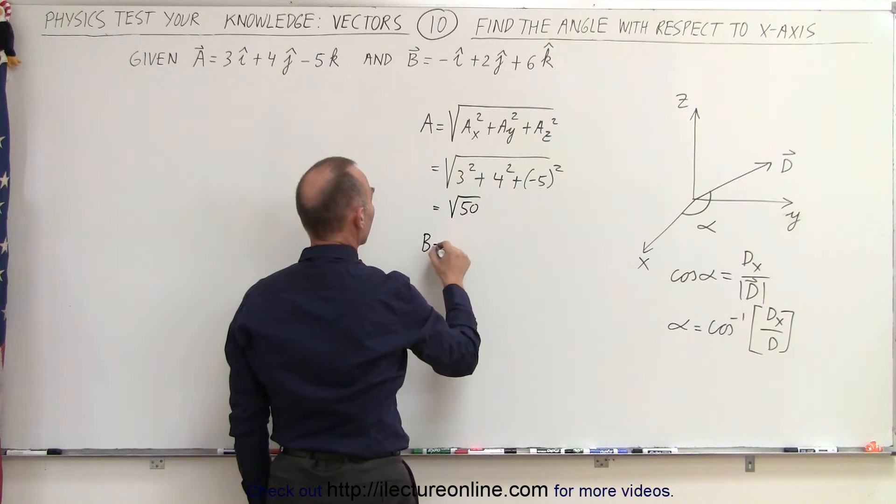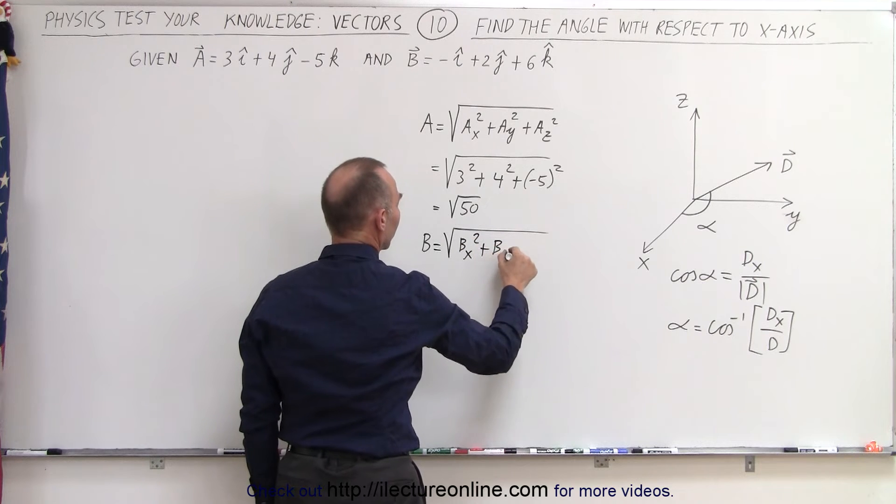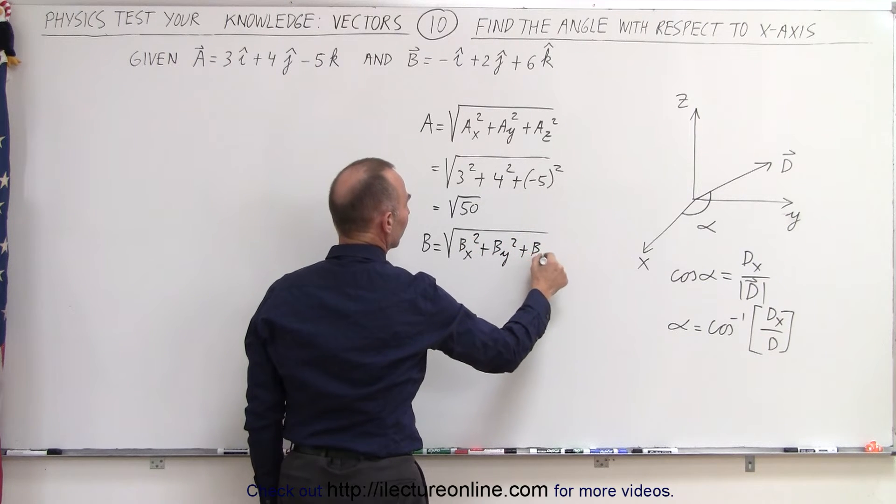We do the same for vector b. That's equal to the square root of b sub x squared plus b sub y squared plus b sub z squared.